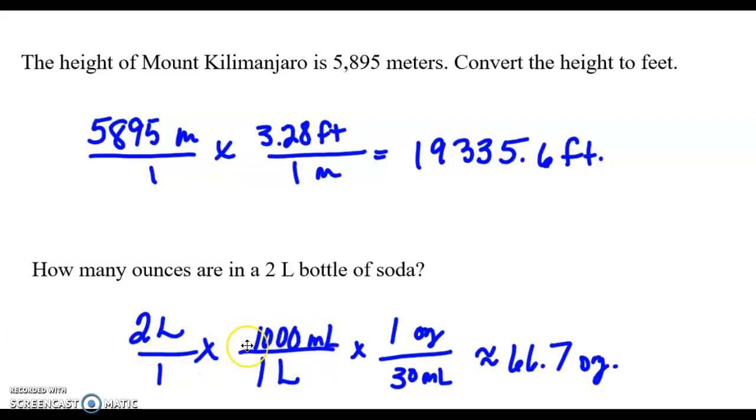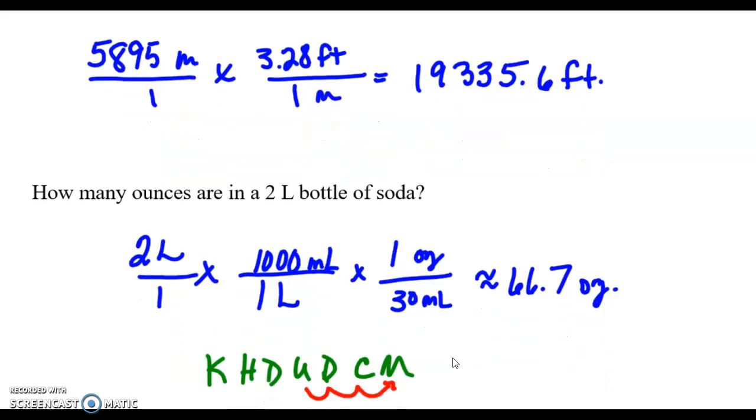I know that there are a thousand milliliters in one liter, so I use that conversion factor. Then I can cancel out the milliliters by using the conversion fraction, one ounce to 30 milliliters. So liters cancels liters, milliliters cancels milliliters. My final answer will be in ounces, in this case 66.7 ounces.